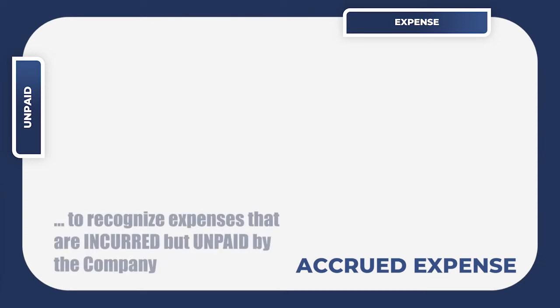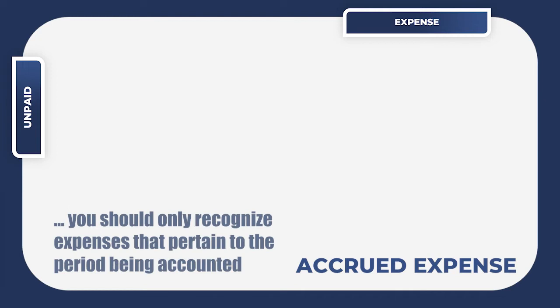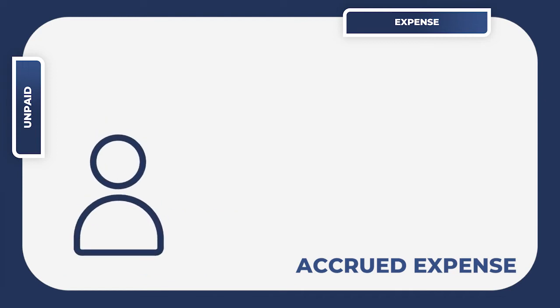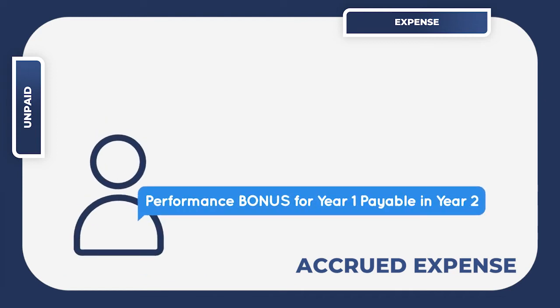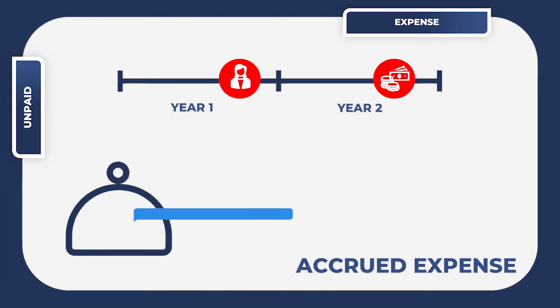Accrued expenses are adjusting entries to recognize expenses that are incurred but unpaid by the company during the year. Under the accrual basis, you should only recognize the expense that pertains to the period you are accounting for. A typical example is bonuses to employees that remain unpaid as at the current year end, even though payment happens sometime in the subsequent year. Since these bonuses are typically based on prior-year performance, the expense should be recognized in the previous year.